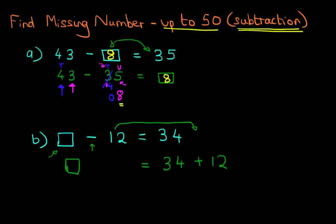Now, what do we do here? Well, let's add the tens. We've got 30 plus 10. So three plus one is 40. Now we can add the units. We've got four and two. Four plus two is six. So therefore the answer is 46.